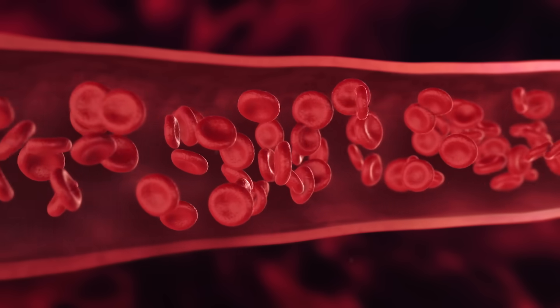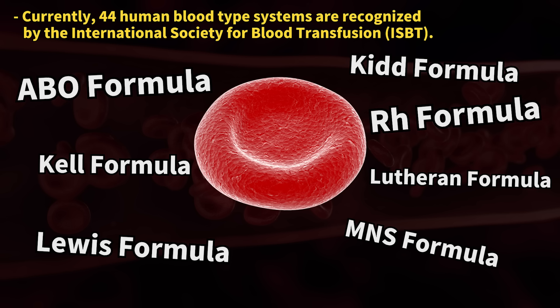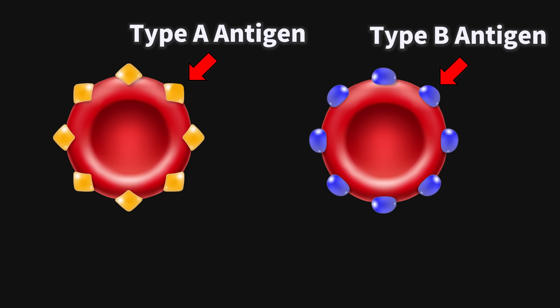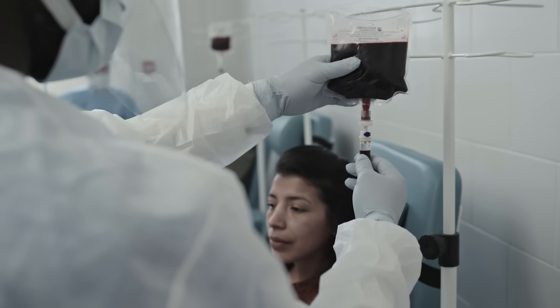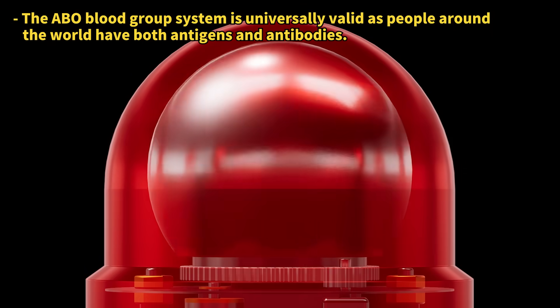All human blood looks similar, but it's categorized into various blood types based on the antigens present on the surface of red blood cells. The most well-known system is the ABO blood group, which classifies blood types based on the presence of type A or B antigens. This classification is crucial because it helps prevent serious complications that can arise during blood transfusions from incompatible blood types.